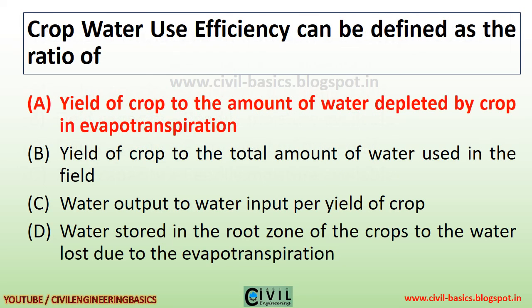Crop water use efficiency can be defined as the ratio of the yield of a crop to the amount of water depleted by cropping evapotranspiration.